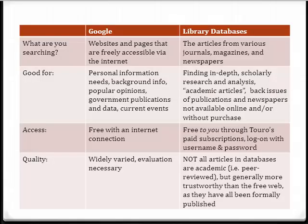Free web searching and library databases are both excellent sources of information, but each resource has distinct strengths. Google is great for finding background information, examples of popular opinion, updates on current events, and for accessing most government publications. Although you can find some academic research articles, especially using tools like Google Scholar, your best bet for scholarly material is library databases.